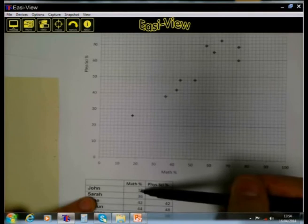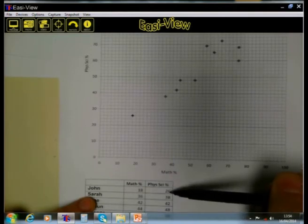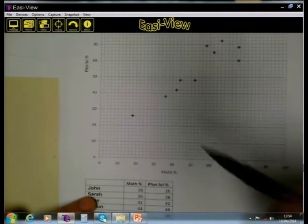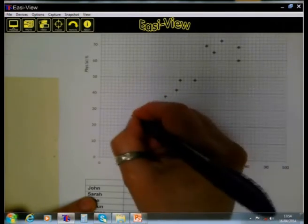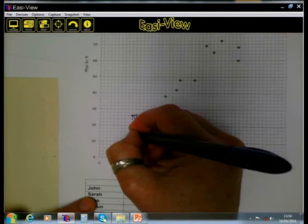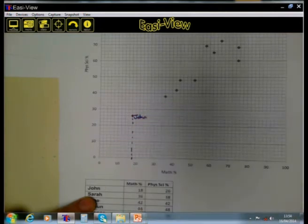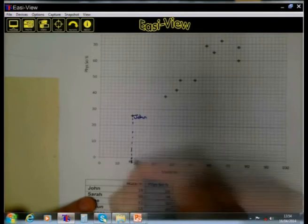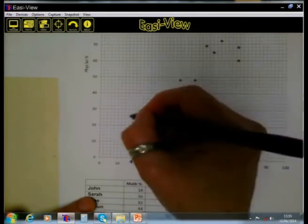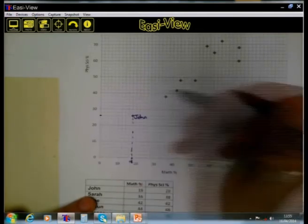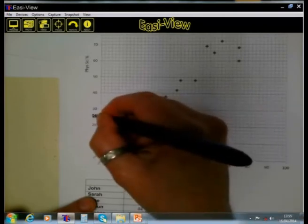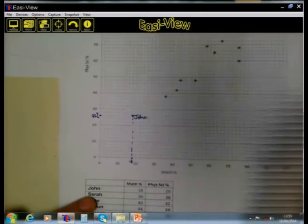John had 18% for mathematics and 26% for physical science. So if this dot here is presenting John, then we can read off that John, at that point, had 18% for mathematics. And if we read the corresponding value here, we see that John had 26% for physical science.